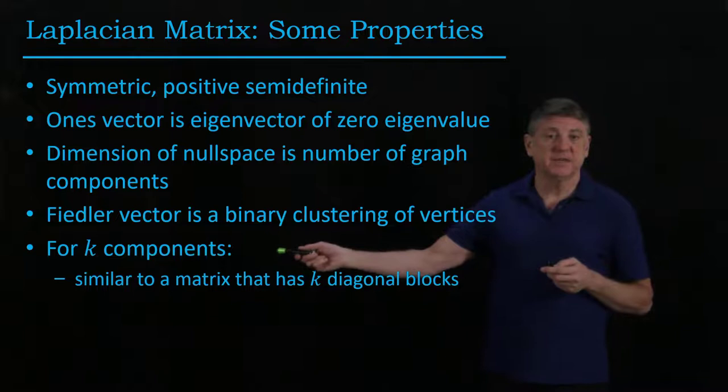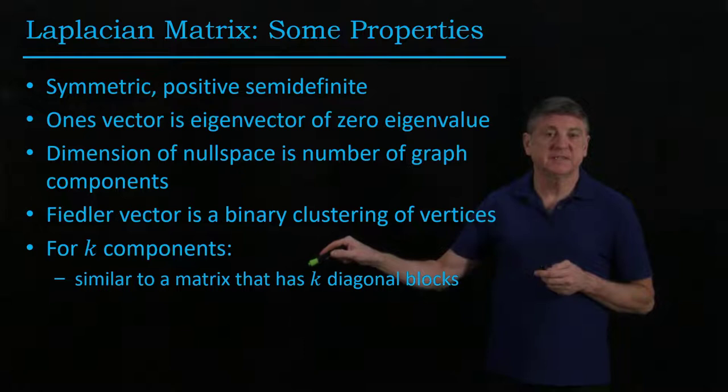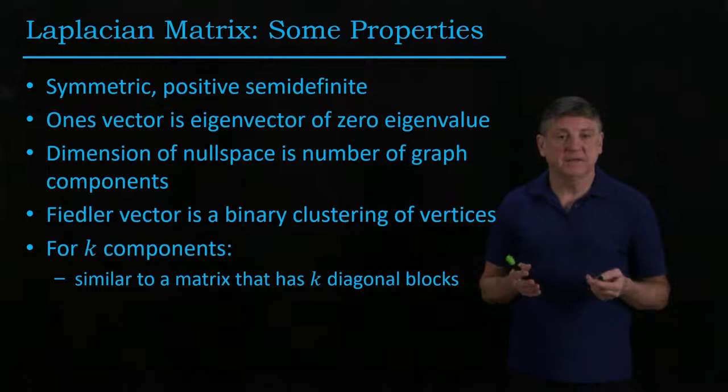If we have k distinct components in our graph, then that means the Laplacian matrix is similar to a matrix that has k diagonal blocks and the non-diagonal blocks are all zeros.